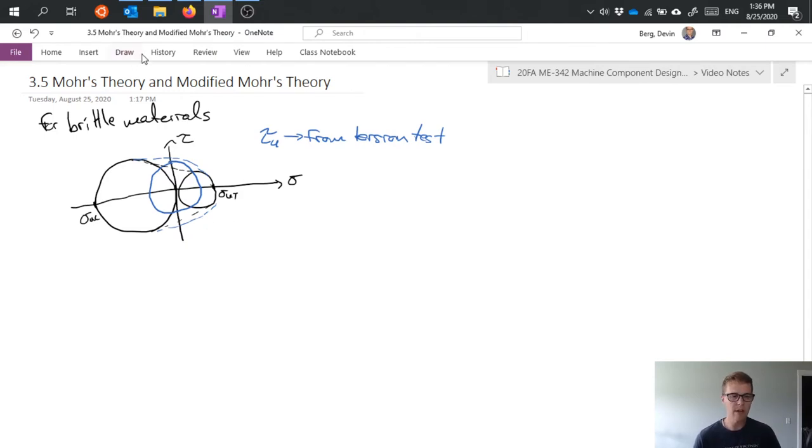Now if I go ahead and draw this on the axes that we've been looking at which is a sigma 1 sigma 2 axis then I can go ahead and mark my ultimate tensile